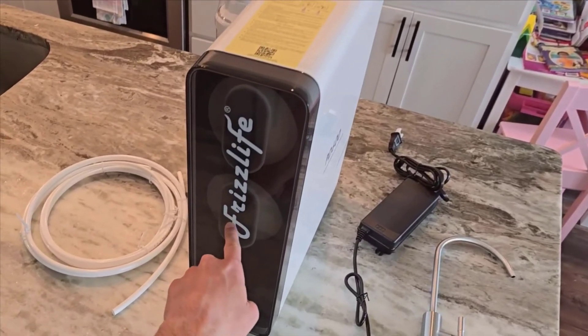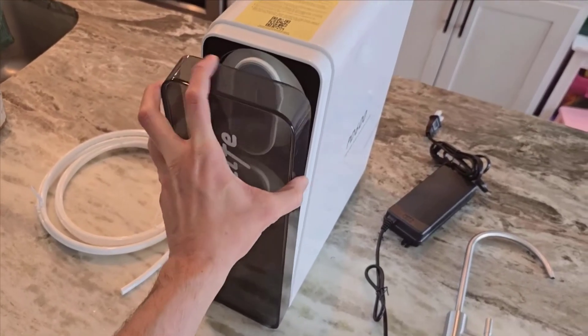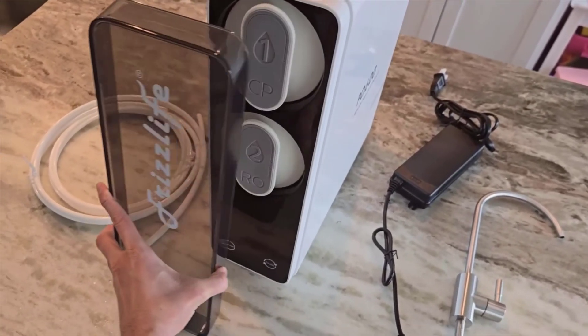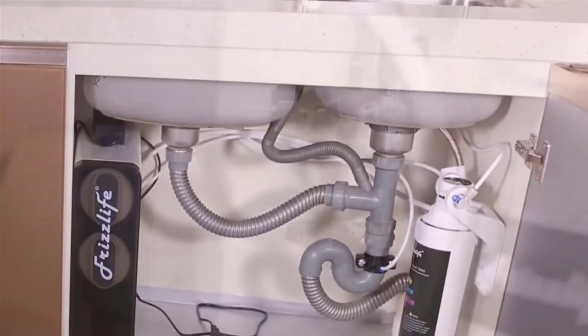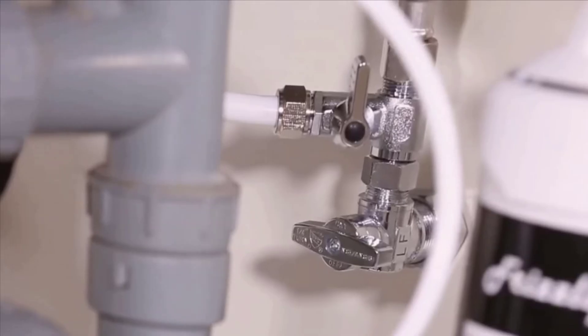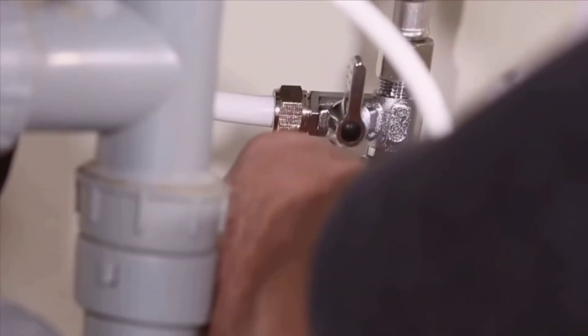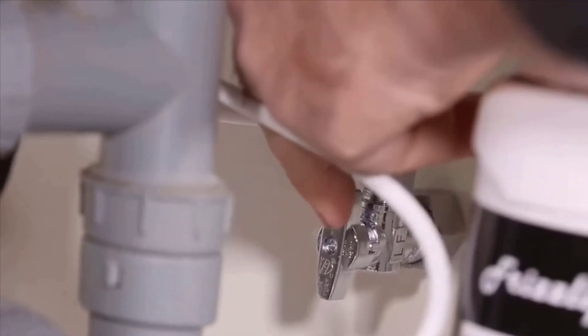In summary, if you're in the hunt for a water filtration system that's all about purity, health, and convenience, the FrizzLife Roe Reverse Osmosis Water Filtration System is your go-to. Its ability to provide alkaline mineral water, the tankless design for fresher water, high flow rate, smart LED display, and efficient use of water make it a top contender in the market.